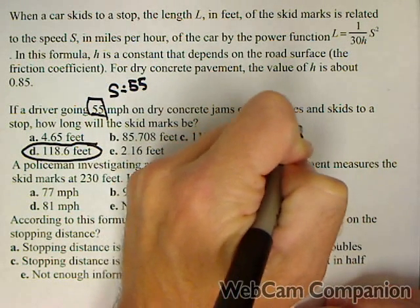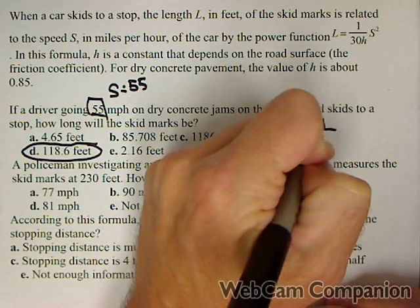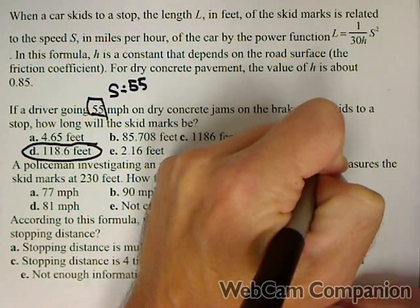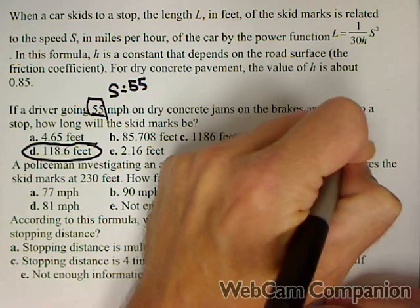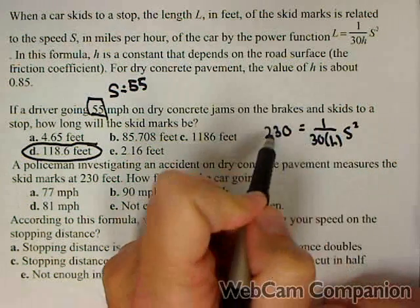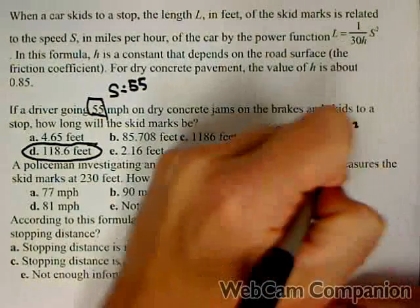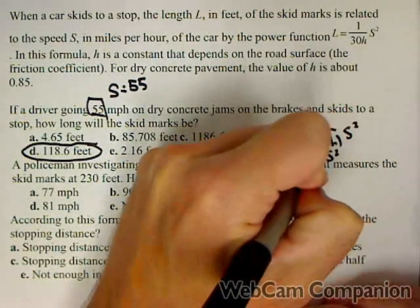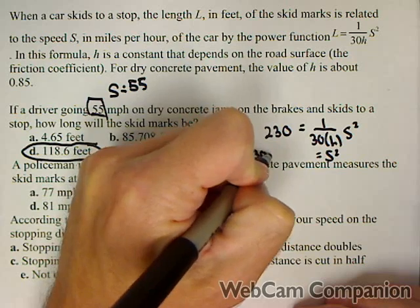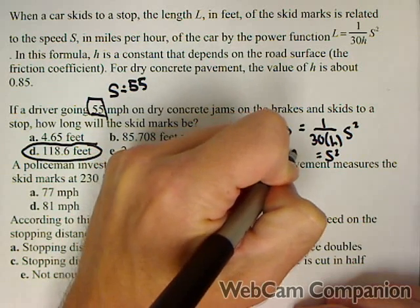So 230 equals 1 over 30 times h times s squared. So we're going to solve this for s squared. So we'll multiply both sides by 30h. So we're going to get that s squared equals 30 times h times 230.